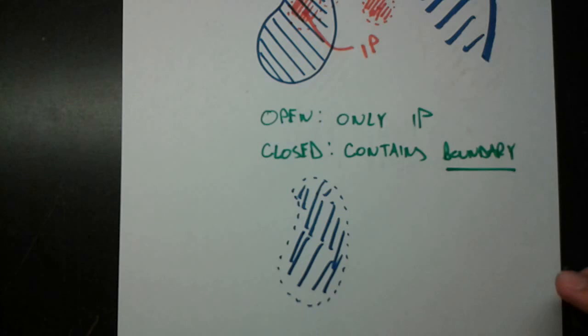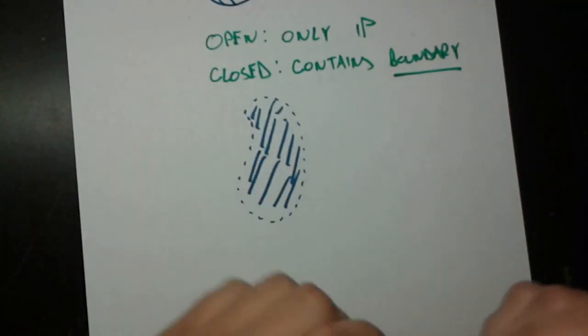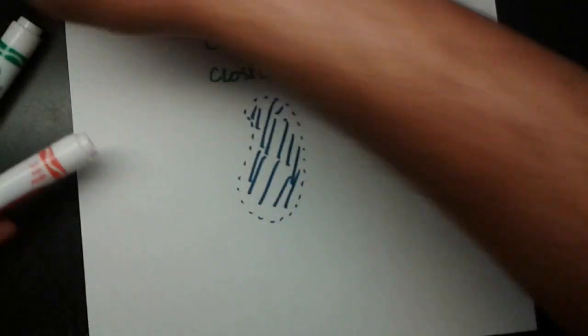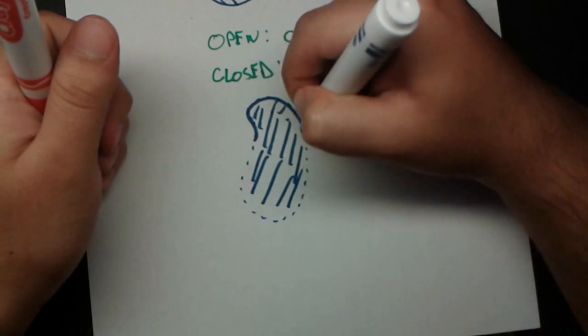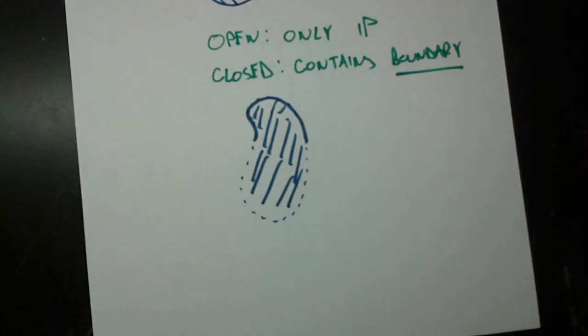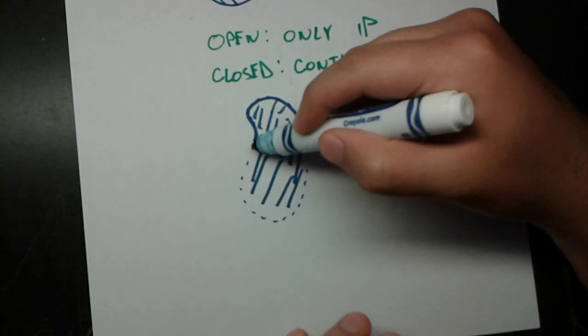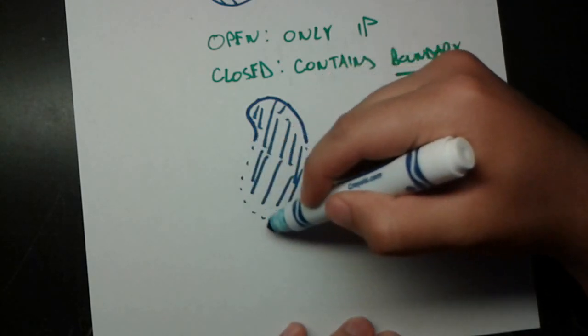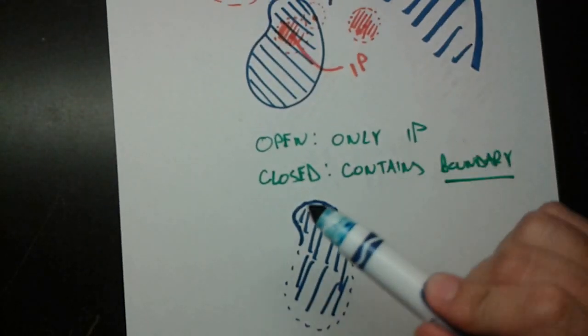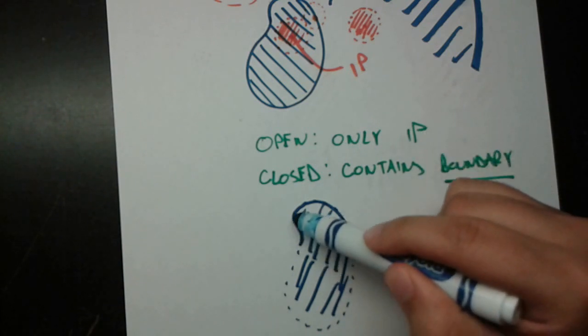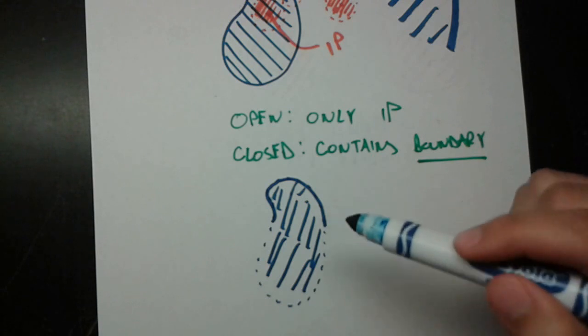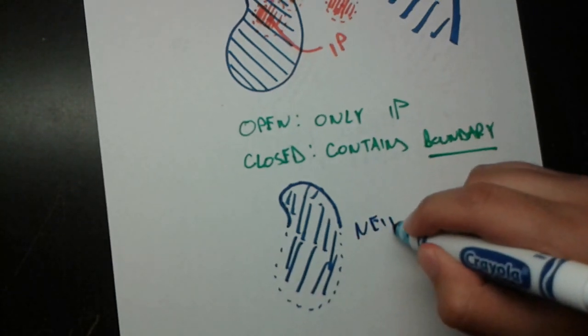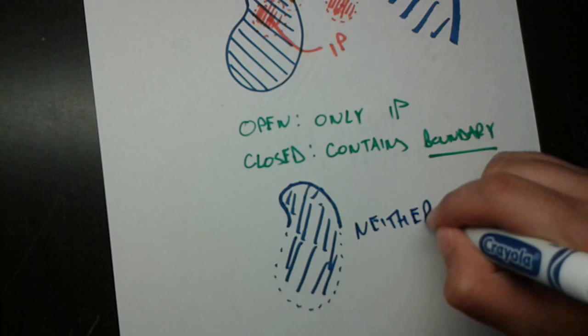Now, it's important to note that sets don't have to be strictly open or closed. They can be neither. And a good example is, let's take this set and modify it. So let's give it part of its boundary. Let's just draw it in. So let's say now it contains that much of its boundary. These are now boundary points, but it still has, this part of the boundary is not included. So we ask ourselves, is it open? Is it only interior points? No, because all of these are boundary points. Is it closed? Does it contain its boundary? Well, not all of it, so it's neither. So it's important to make that distinction. It doesn't have to be open or closed.